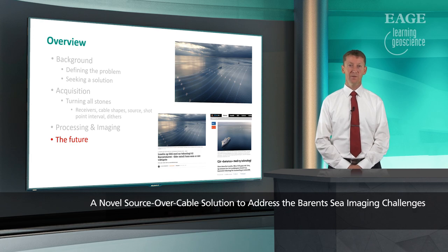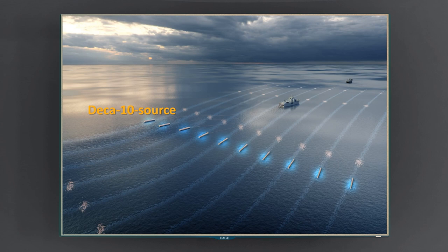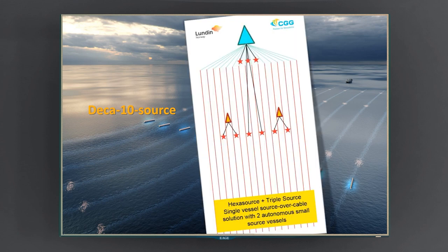Looking to the future of this technology: the setup we used was a 14-cable streamer vessel and three sources, but we have since acquired data with six sources, which is yet another improvement. We may go to ten sources. In the future, we may see a solution using an autonomous source vessel with longer gun umbilicals to have six sources in source-over-cable mode. We may also shoot a source behind the streamer vessel to obtain data for full waveform inversion and really long offsets as well.